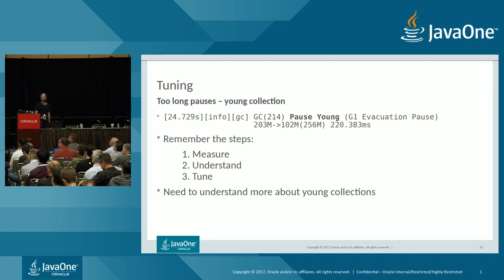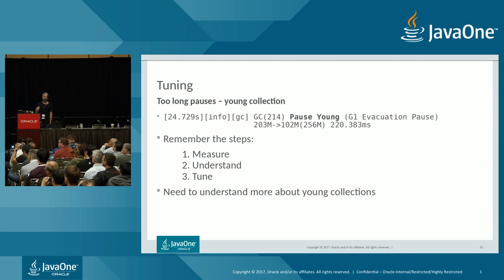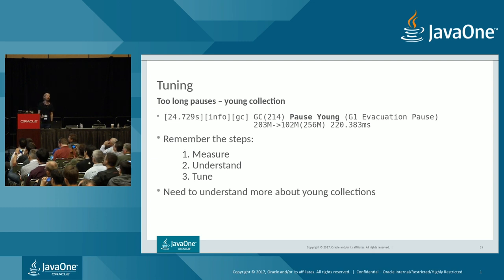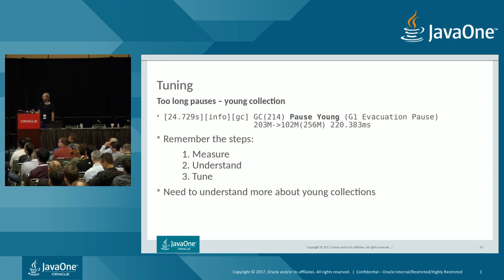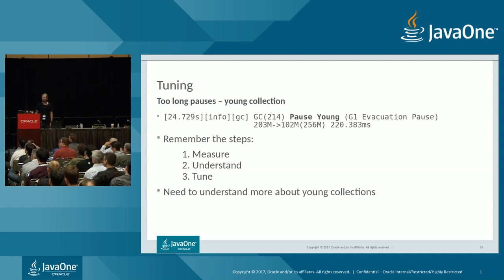The young pause ran 220 milliseconds, slightly over the 200ms target. To solve this we use the same method: measure, understand, then tune. But do we have sufficient data? No — we need to understand what a young collection is and what is going on inside the JVM.